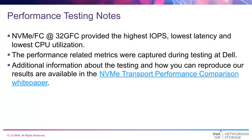For performance testing, I want to be clear upfront: NVMe over Fiber Channel performs really well at 32-gig Fiber Channel. NVMe FC provided the highest IOPS, lowest latency, and lowest overall CPU utilization in general. The performance metrics I'm going to share were captured during testing at Dell, and we published an NVMe Transport Performance Comparison white paper containing more information about the testing and how you can reproduce our results. We tried to be as transparent as possible.